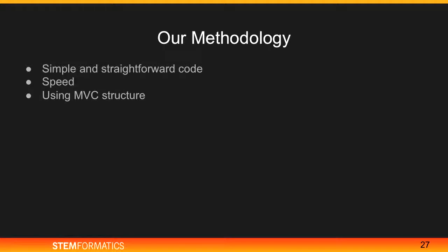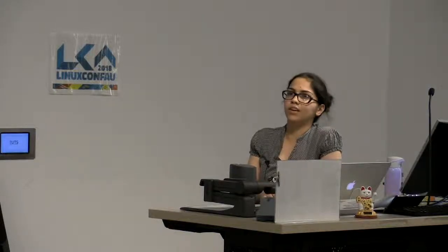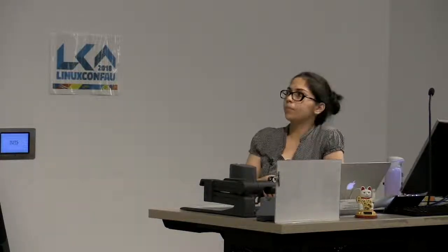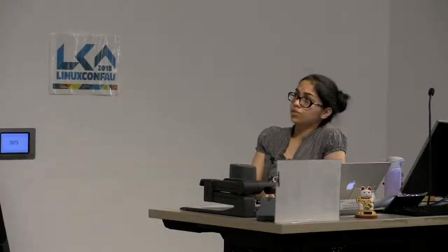Our methodology at Stimformatics: we try to use simple and straightforward code — we want to make it as simple as possible for everyone to understand because our code is open source. We believe in writing simple code so it is easier for everyone to understand. For speed, we want our graphs to be as fast as possible and don't want users to wait. We try to do everything we can, including AJAX and Redis, not doing analysis on the fly but submitting it as a job instead. We also use an MVC framework — the model-view-controller structure that we try to follow.